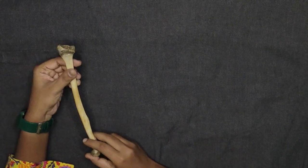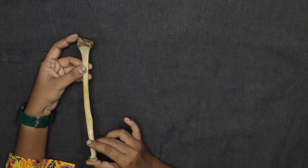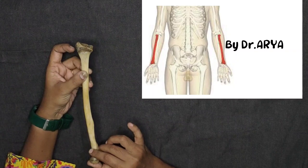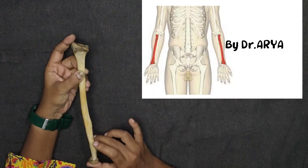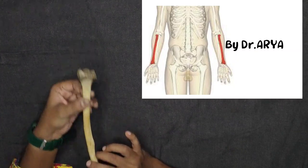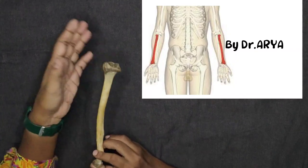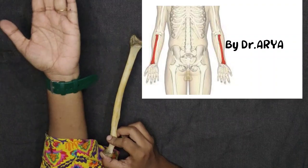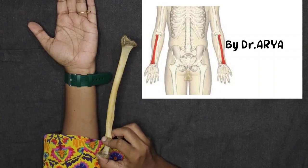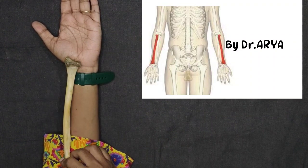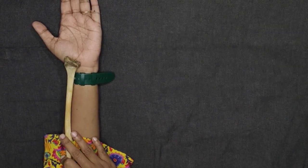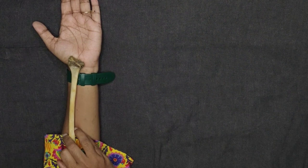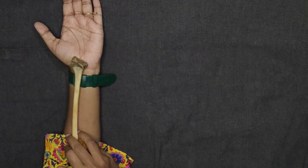Hi, hello and welcome back to my channel. I am going to talk about the radius bone in this video. The radius bone is a lateral bone. In anatomical position, it is on the lateral side of the forearm.